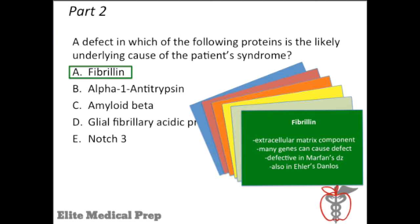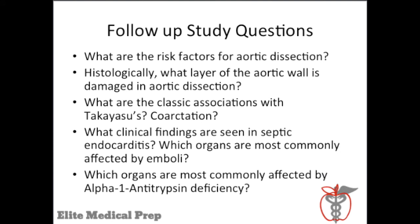A full discussion of flashcards is beyond the scope of today's discussion, but it's something our tutors work on with all of our students. We've successfully answered both parts of our two-part question. The key to great USMLE preparation is learning all the angles of high-yield questions. Additional questions worth exploring include: what are the risk factors for aortic dissection? What layer of the aortic wall is damaged histologically? What are the classic associations with Takayasu's arteritis and coarctation? What clinical findings are seen in septic endocarditis, and which organs are most commonly affected by alpha-1 antitrypsin deficiency?